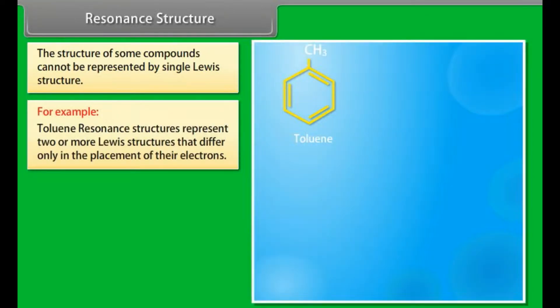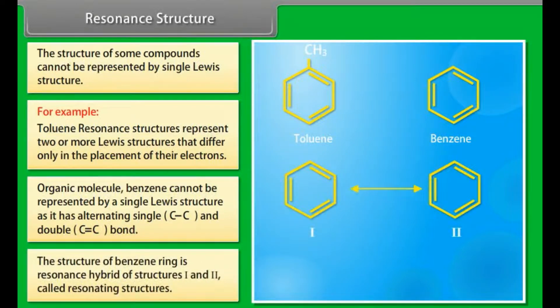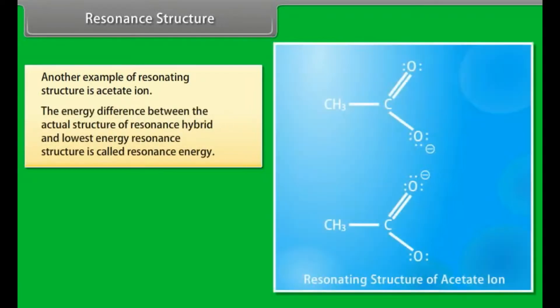Resonance structures. The structure of some compounds cannot be represented by a single Lewis structure, for example toluene. Resonance structures represent two or more Lewis structures that differ only in the placement of electrons. The organic molecule benzene cannot be represented by a single Lewis structure as it has alternating single and double bonds. The structure of the benzene ring is a resonance hybrid of two resonating structures. Another example of resonating structures is the acetate ion. The energy difference between the actual resonance hybrid and the lowest energy resonance structure is called resonance energy.